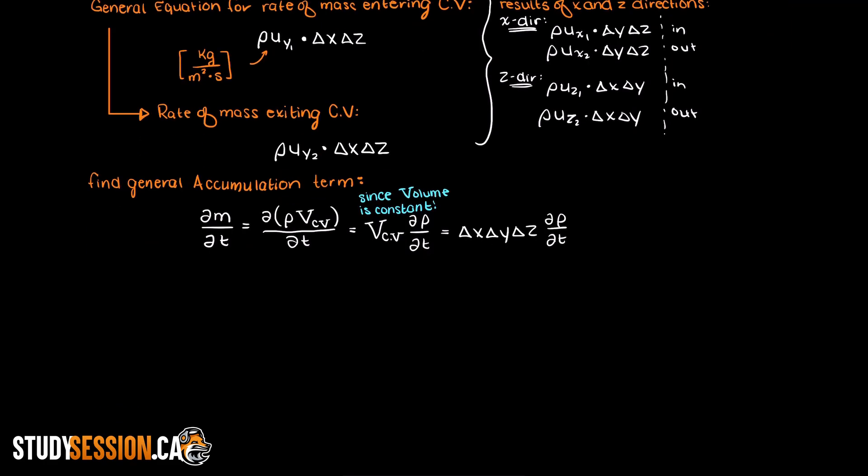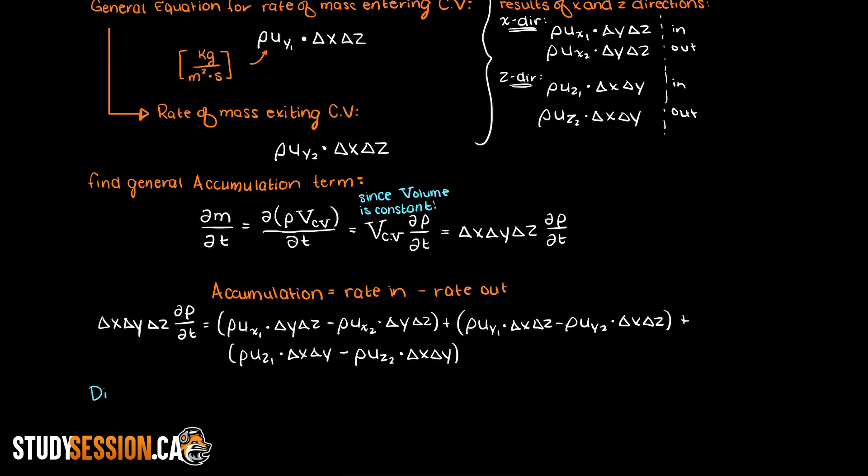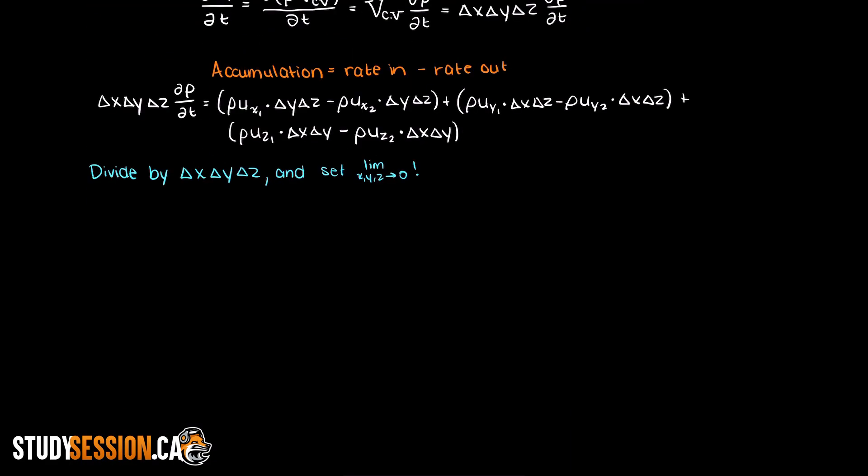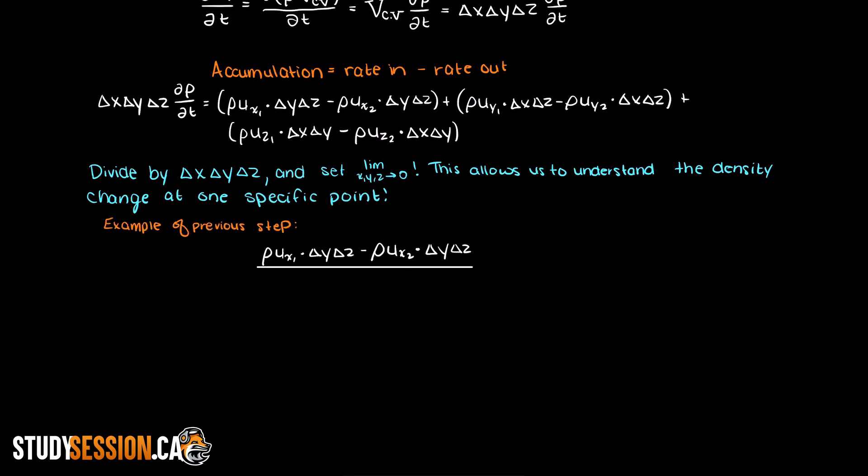Therefore we are now able to substitute in our three general equations we found for the accumulation, the rate of mass in, and the rate of mass out. Now all that is left to do is divide the right side of our equation by the size of our control volume and set the limit for all sides of our control volume to zero. The reason we do this is because it allows us to understand the density change at one specific point. If this is still confusing to you, I recommend you check out the continuum assumption video, for which I will leave a link in the description below for your better understanding.